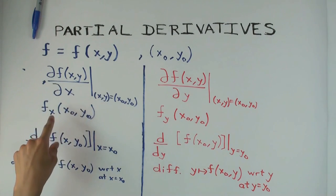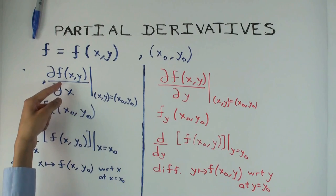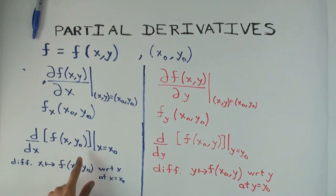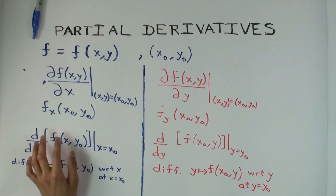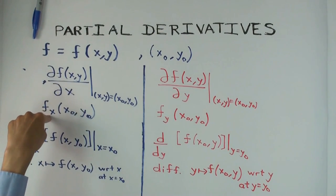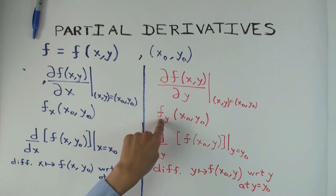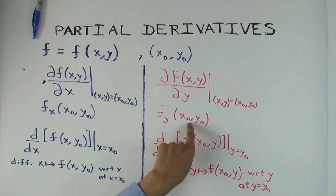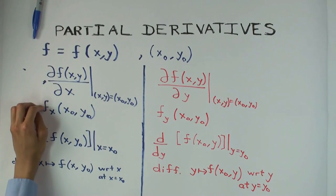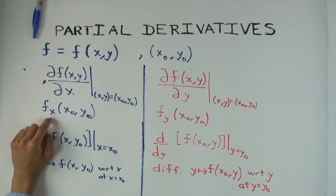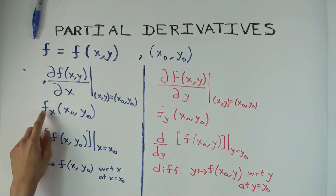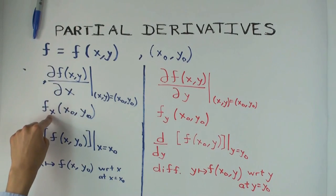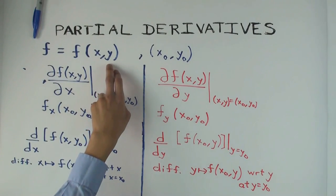There are two things I want to emphasize. First, the value of the derivative doesn't just depend on x-naught — it depends on both x-naught and y-naught, because y-naught is fixed right in the definition. If I change y-naught, the value of the derivative could change. So the value of the partial derivative with respect to x depends on both coordinates. Similarly, the value of the partial derivative with respect to y depends on both coordinates. Second, in order to make sense of the partial derivative with respect to x, you have to know what other variable you are keeping constant. It doesn't just make sense to say 'the partial derivative with respect to x' — you are taking the partial derivative with respect to x holding y constant.